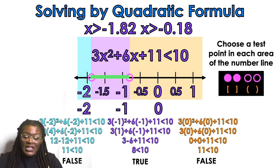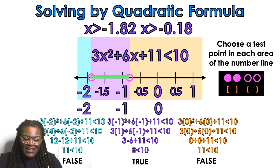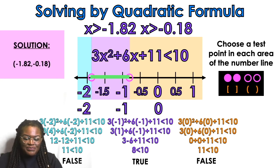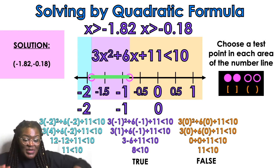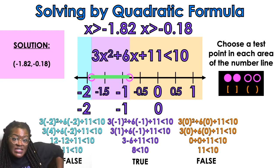Plugging in 0 for the orange area is false. The only area that works is the purple area. In interval notation, the solution is (−1.82, −0.18) — parentheses because we had strict less than, meaning open circles.